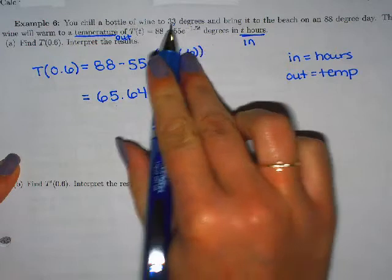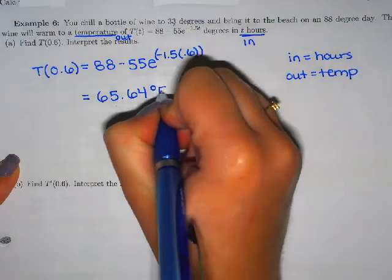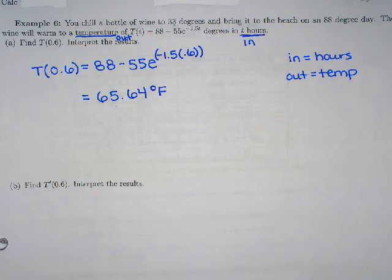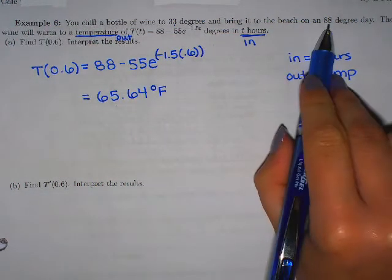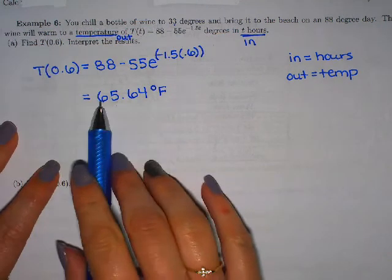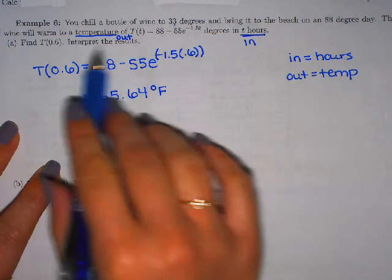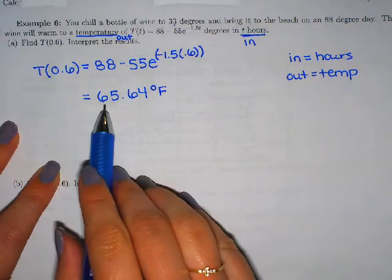Put in the hours you get out the temp. What do you think this is in? It doesn't actually say on this one, this must be degrees Fahrenheit. It can't be degrees Celsius. 88 degrees Celsius on the beach you would literally be on fire, so not Celsius.